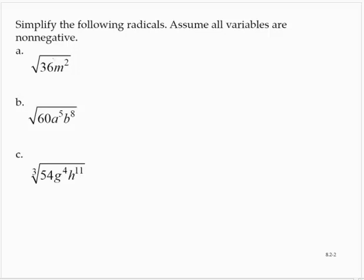So when we have a square root, what we're looking for are perfect square factors. Well, 36 is a perfect square — that's 6 squared. And of course, we have m squared. So I can break that up as the square root of 6 squared times the square root of m squared.